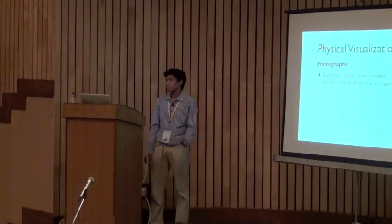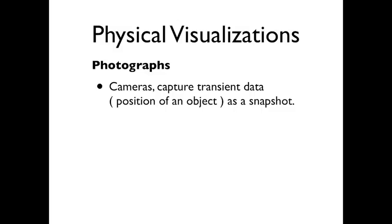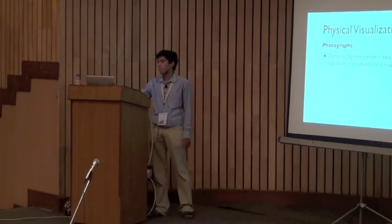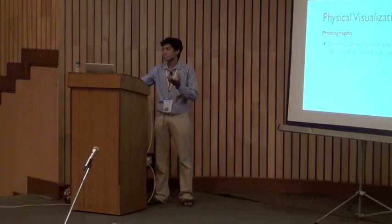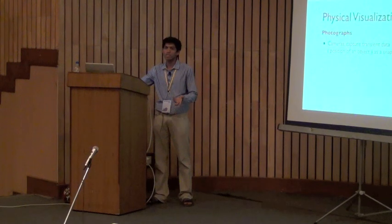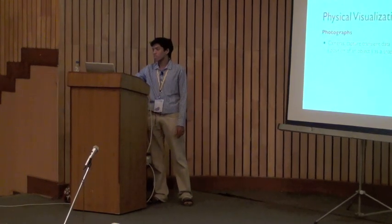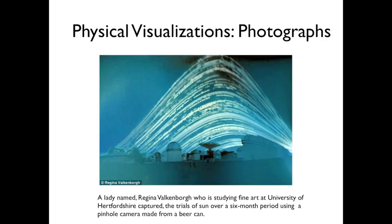One example is photographs. Everyone looks at photographs as a memory, a souvenir, or a hobby, but I see photographs as realizations — a camera is capturing a lot of transient data: the position of an object, a person, or a static object. Here is a visualization — actually a photograph taken by a student doing her master's in art at a university. She tried to visualize the position of the sun by taking six months of data. The picture has a lot of streaks, and the bright lines are the streaks produced by the movement of the sun from dawn to dusk.